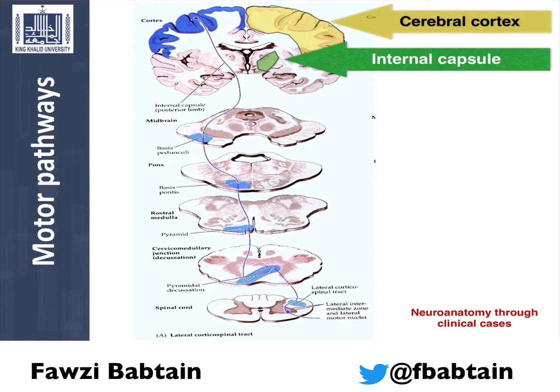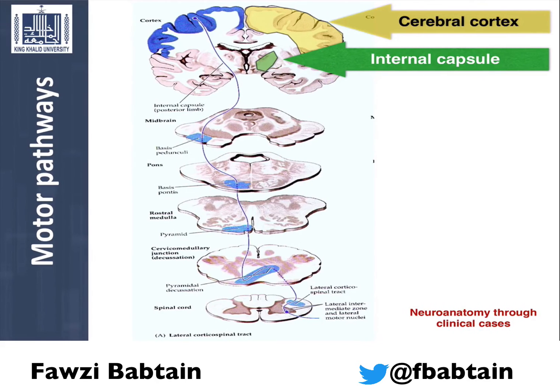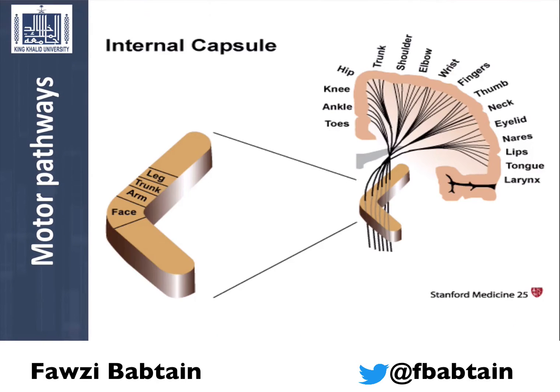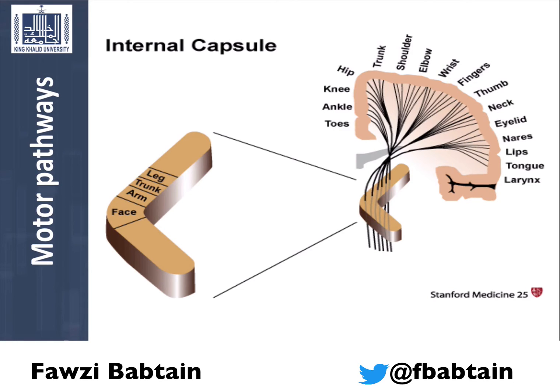The internal capsule is deeply located within the brain. It has the areas of the face, arm, and leg compacted in a small segment.